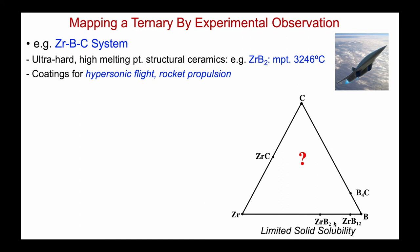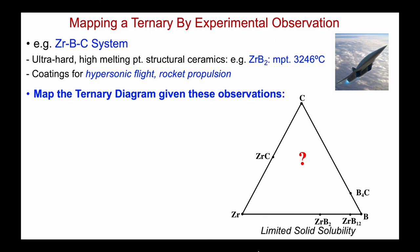Here's a picture of the compounds known in the Zr-C-B system — they're basically line compounds, and we'll assume no solid solubility. Let's see if we can map the ternary diagram in the solid state given a few observations. First, we're told that zirconium diboride is stable and does not react with carbon — so if we mixed ZrB₂ and carbon, they would coexist without reacting.